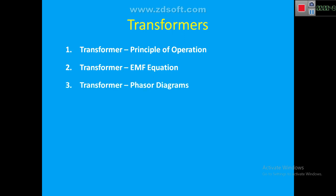The third topic is phasor diagrams, which are divided into two parts. First, to understand the primary operation of the transformer, we remove all the losses and call it an ideal transformer. Then there is a practical transformer which includes all the losses. Each — ideal and practical — is analyzed at two conditions: no load and on load.